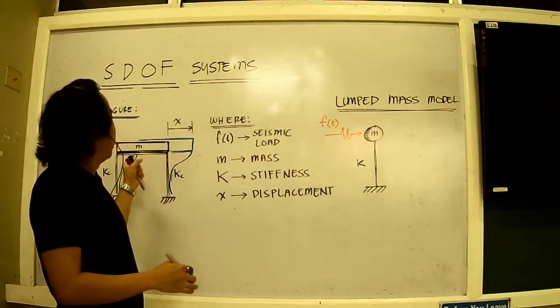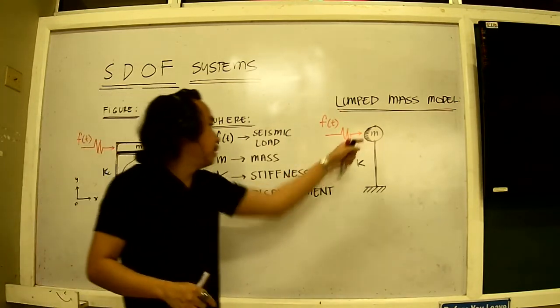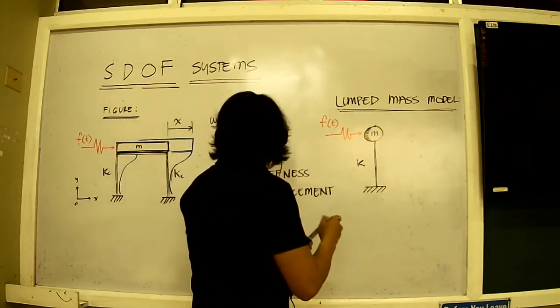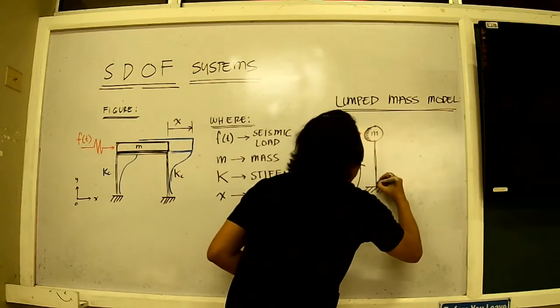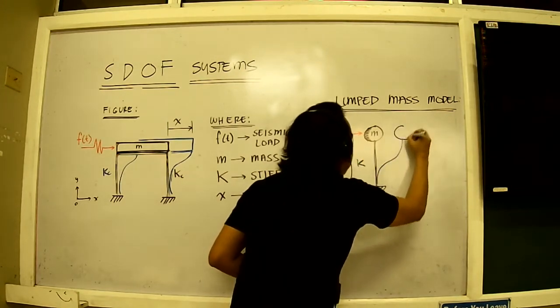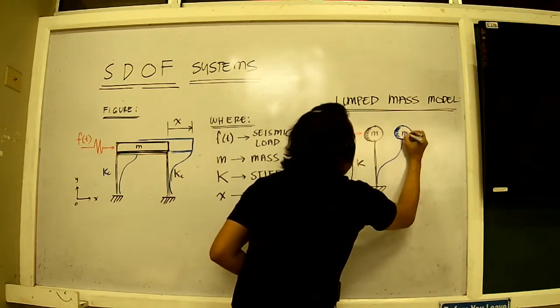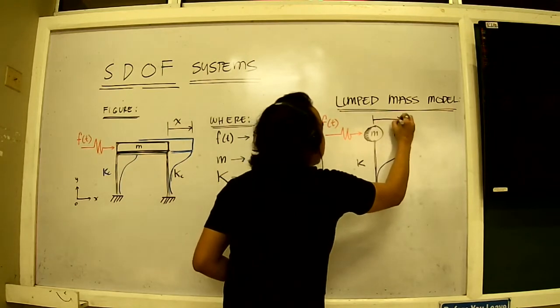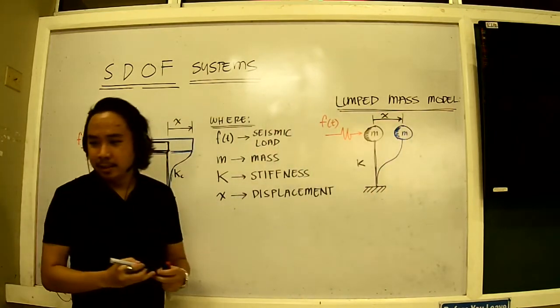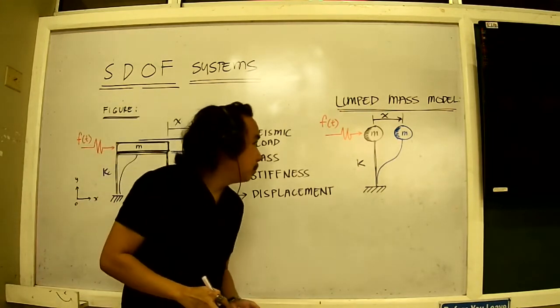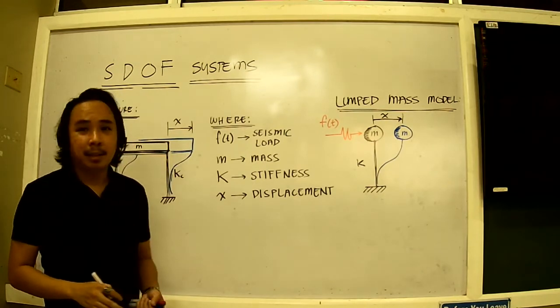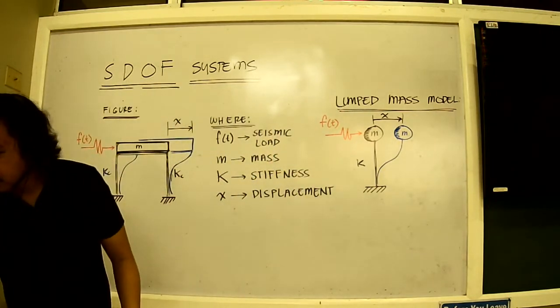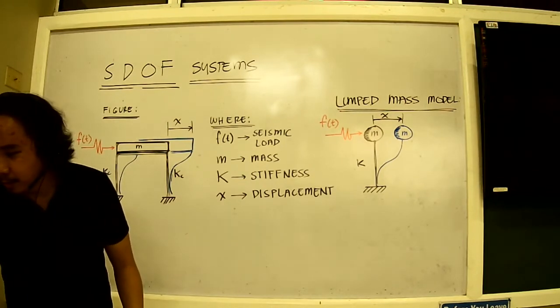The mass here is already been generalized and it is being lumped. That's the term, lumped mass model. Now, when this seismic activity occurs, this structure deflects in a way that is almost similar to this, in which the displacement will still be called as X. So, I think the lumped mass model is a much more appropriate way of presenting things rather than the actual figure here given.